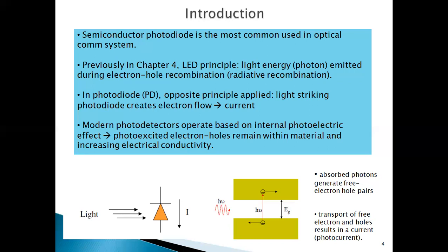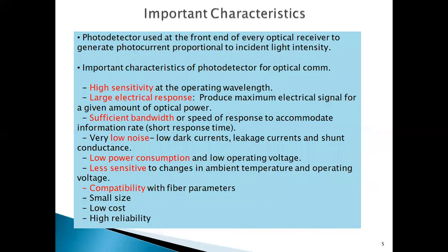The photodetector is used at the front end of optical receivers, where it generates a photocurrent. The photocurrent is basically the movement of electron and hole pairs produced by photon excitation. The photocurrent produced is proportional to the incident light intensity or photon intensity.